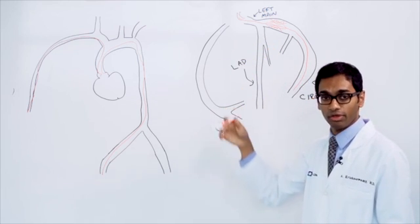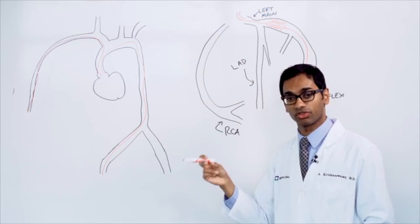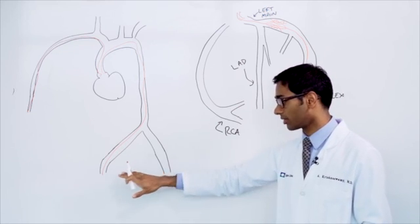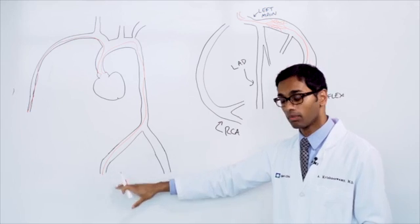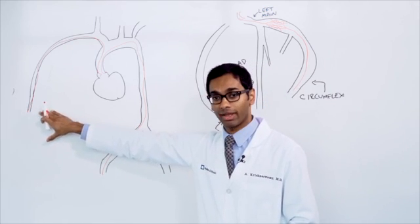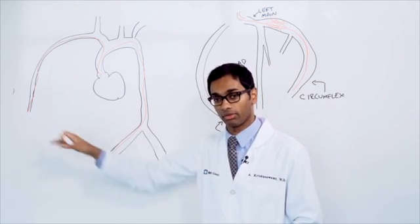When the procedure is completed, all of these wires and catheters come out of the body. We may decide to use a small suture device to close up the area where we've gone in the leg, or we may use a little inflatable band to close up the artery at the wrist.